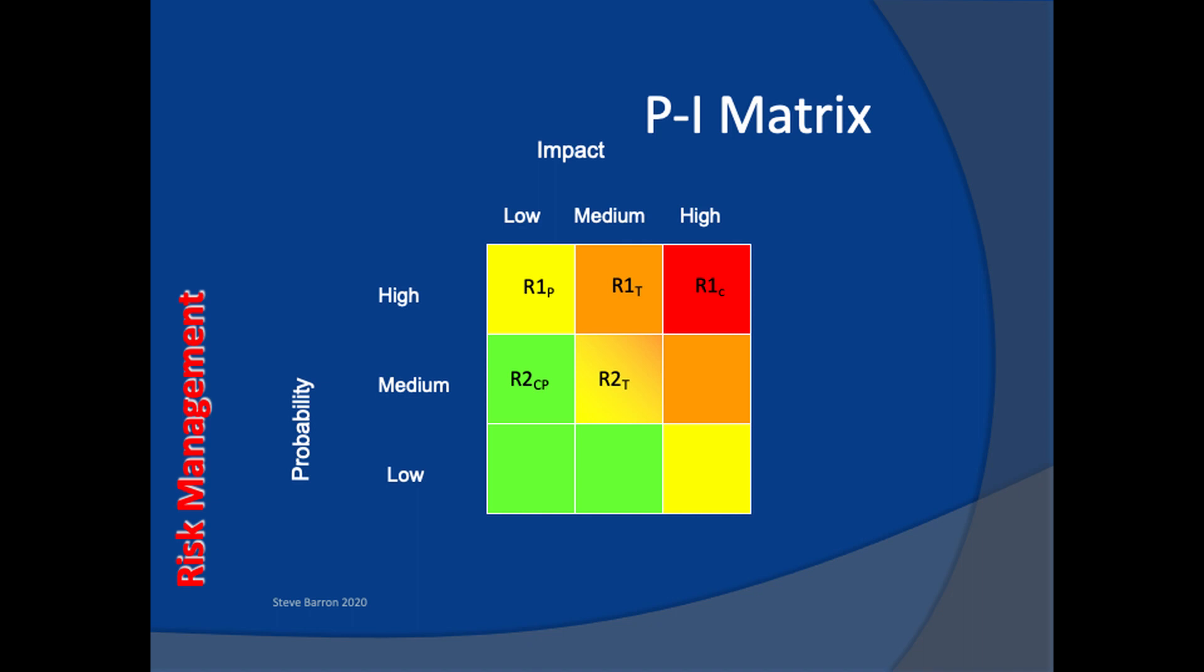For the priority risks, we will actively develop mitigation plans that are designed to reduce risk status, pushing the risk into the lower levels of the matrix. If this is not possible, we will create contingency plans that provide alternative actions that will progress the project if the risk occurs.